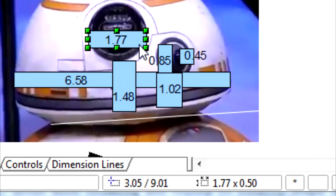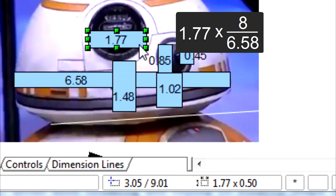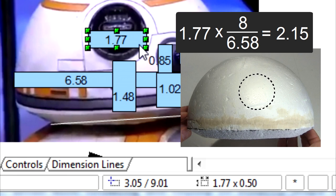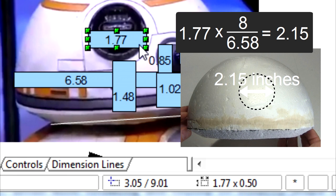Therefore, to get how wide the radar eye should be, I multiplied the width of this rectangle, 1.77 units, by 8, and divided by 6.58, which tells me the eye should be 2.15 inches. And so on, for anything else.